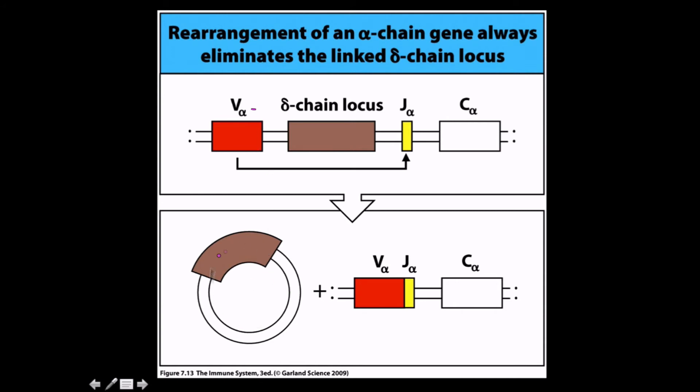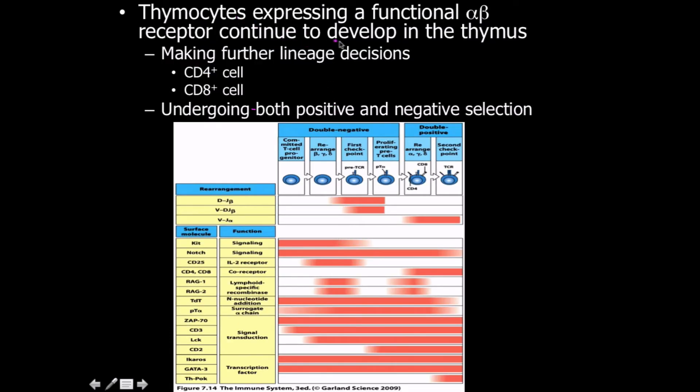Rearrangement of an alpha chain gene always eliminates the linked delta chain loci. You can see the signal joint here and the coding joint. We have to remove that in order to have appropriate somatic recombination. Cells expressing a functional alpha-beta receptor continue to develop in the thymus and ultimately divide into CD4 and CD8 positive T cells, undergoing both positive and negative selection in the thymus. This diagram shows all of the surface molecules and functions, and the time points at which they're present.